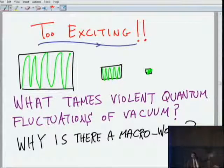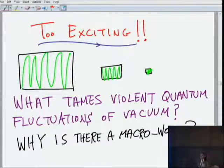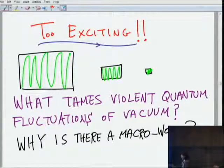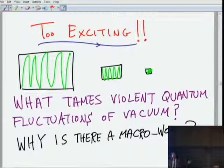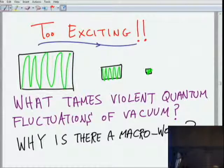Neither one of those things looks anything like the world we see. This nice, big, macroscopic, flat universe. It's 10 billion years old. We can walk around in it. Everything's fine. That looks absolutely nothing like what we predict from the simple back-of-the-envelope estimate.